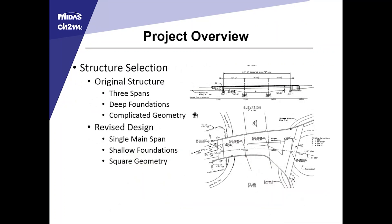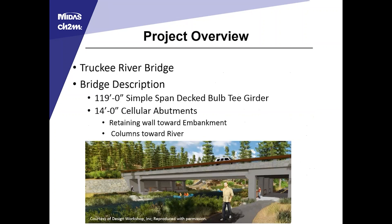A little bit on the structure selection. The original structure had three spans with deep foundations and complicated geometry. The bridge supported a traffic circle, leading to a wide flare and non-parallel girders. The design was revised to rely on a single main span with shallow foundations and square geometry — 119 feet long, simple-span decked bulb T girders with 14-foot clear opening cellular abutments.